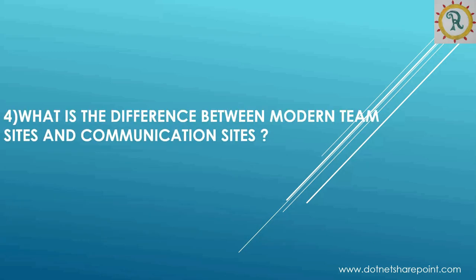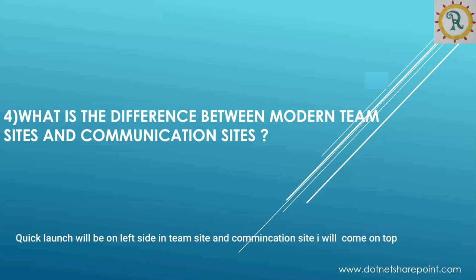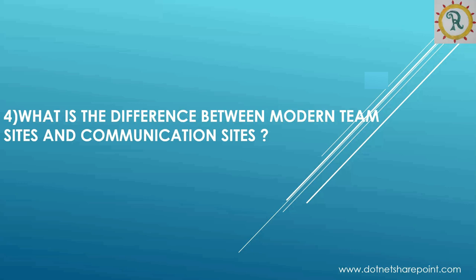The fourth question: what is the difference between modern team sites and communication sites? In modern team sites it's a grouping concept — once created, it defaults to a private group team site connected to an Office 365 group. In a communication site there is no such concept. In a modern team site, news feeds are enabled by default; in a communication site they are disabled, though we can enable them via the admin center.